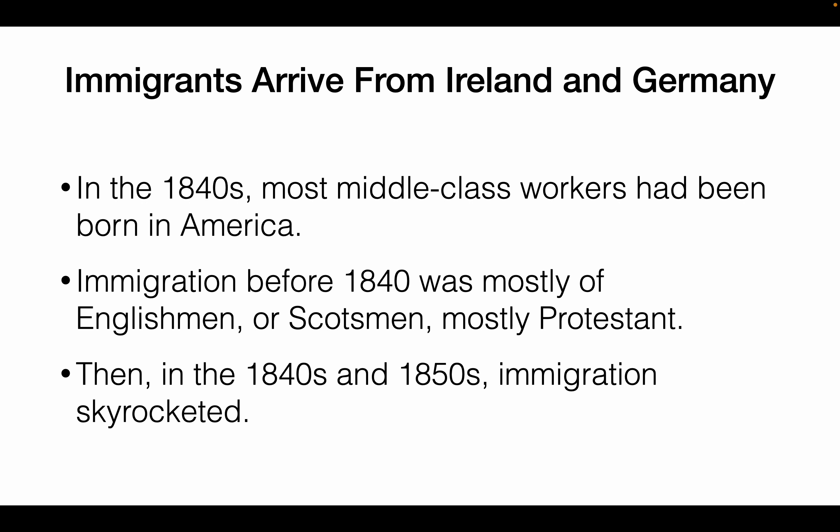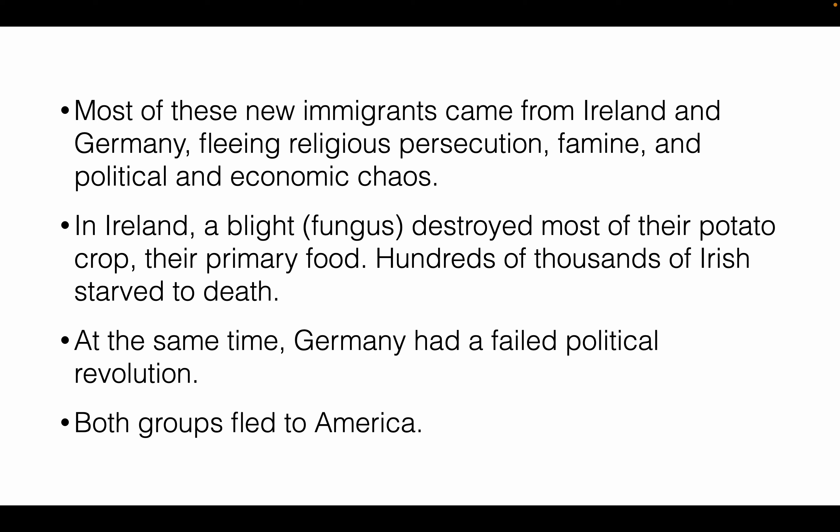By the 1840s, most middle class workers had been born in America. However, we start to see the rise of immigration in the 1840s as well, from new places and with new religions. In the 1840s and 50s, immigration went through the roof. Most of these new immigrants were coming from Ireland and from Germany, pushed out by religious persecution, the Irish potato famine, and political and economic problems.